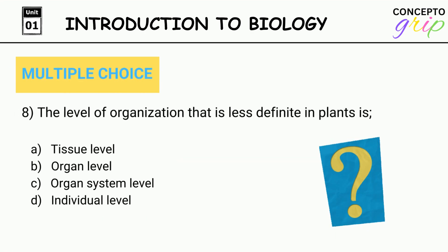Question 8. The level of organization that is less definite in plants is: A. Tissue level, B. Organ level, C. Organ system level, D. Individual level. Correct option is C. Organ system level.